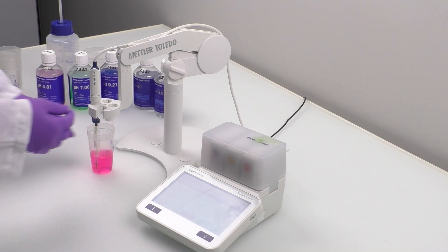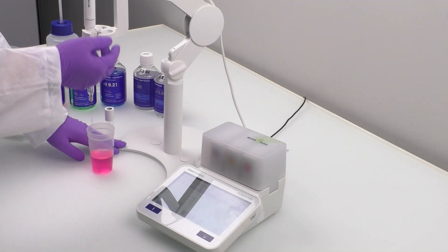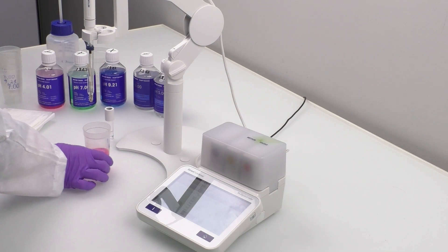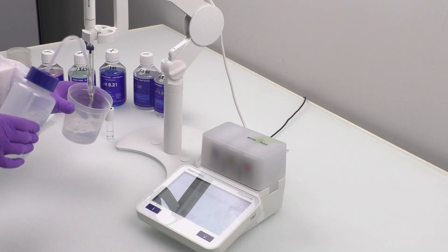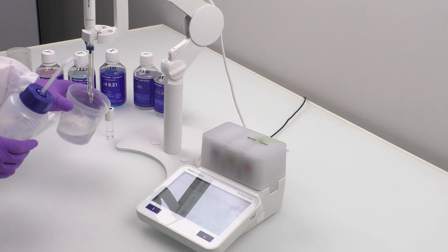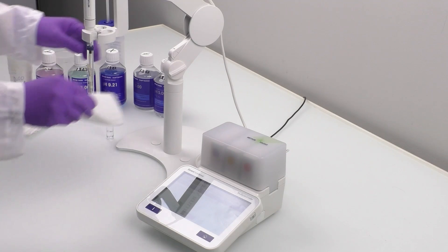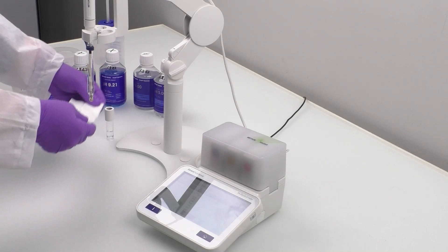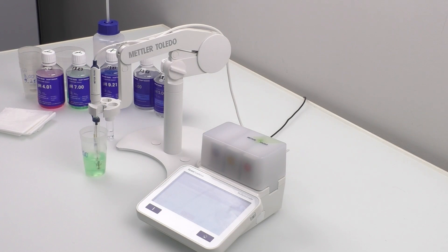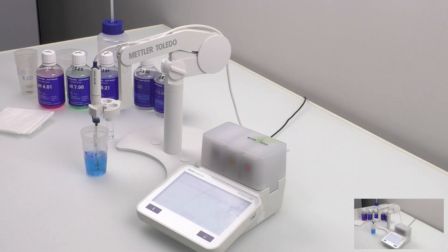Now, it's time to remove the pH buffer 4.01 beaker and rinse the sensor carefully with deionized water. Remember to carefully dab it dry with a tissue. Repeat this calibration process with the pH buffers 7.00 and 9.21.